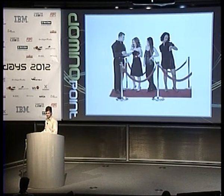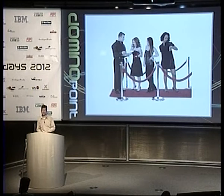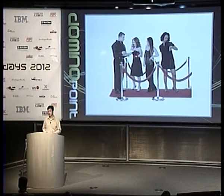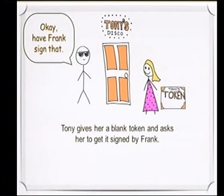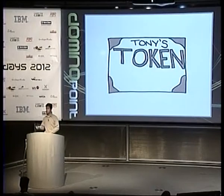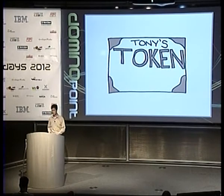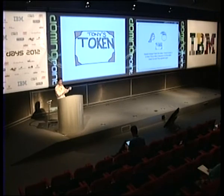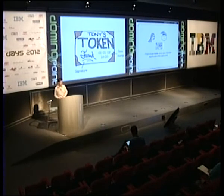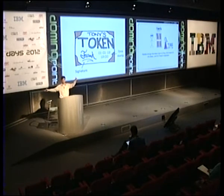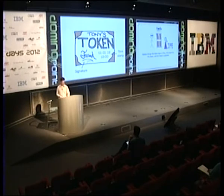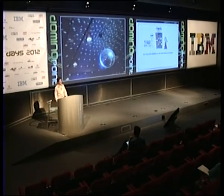Natalie wants to go to the disco but she's not on Tony's list — she's a friend of Frank's. So Tony says, I have this token — take it over to Frank, and if Frank knows who you are, he will sign it, and you can bring it back, then you're in. She goes and brings the token to Frank. Frank checks his list and says, Natalie, I know who you are, I will sign your token. He puts his name and a timestamp on it. She brings it back to Tony, who says yes, of course you can come in. She dances all night and is very happy.